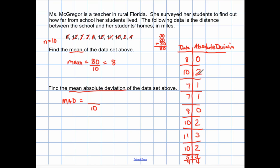0 plus 2 is 2, plus 1 is 3, plus 1 is 4, plus 0 is 4, plus 2 is 6, plus 3 is 9, plus 2 is 11, plus 3 is 14, plus 4 is 18. So the total is 18, and now I'm going to divide it by 10.